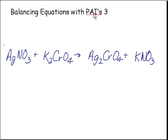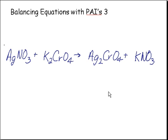Here is another example of balancing with polyatomic ions. You'll notice in this equation we have two polyatomic ions. We have nitrate on the left and on the right, and we have chromate, CrO4 on the left and CrO4 on the right. We'll just put a yellow line under those.